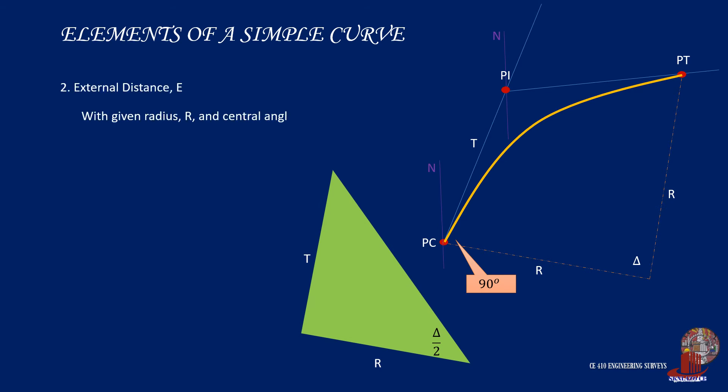The external distance E is the distance from the apex of the curve to the vertex. By using a triangle formed by PI, PC, and point O, we can separate the hypotenuse with the radius R and the external distance E. To integrate E in the formula, we use cosine of half the delta as R all over the hypotenuse R plus E. Cross-multiply the terms to isolate E and factor out the similar variable R, making the equation E is equal to R times 1 all over cosine of half of delta minus 1, which we can also simplify as R times secant of half of delta minus 1.